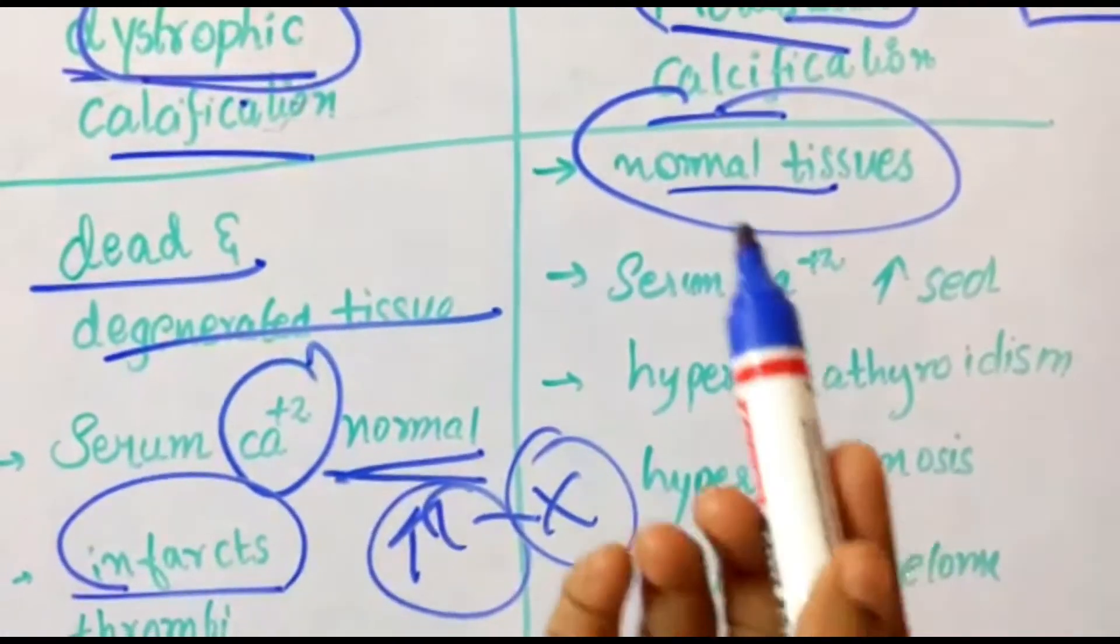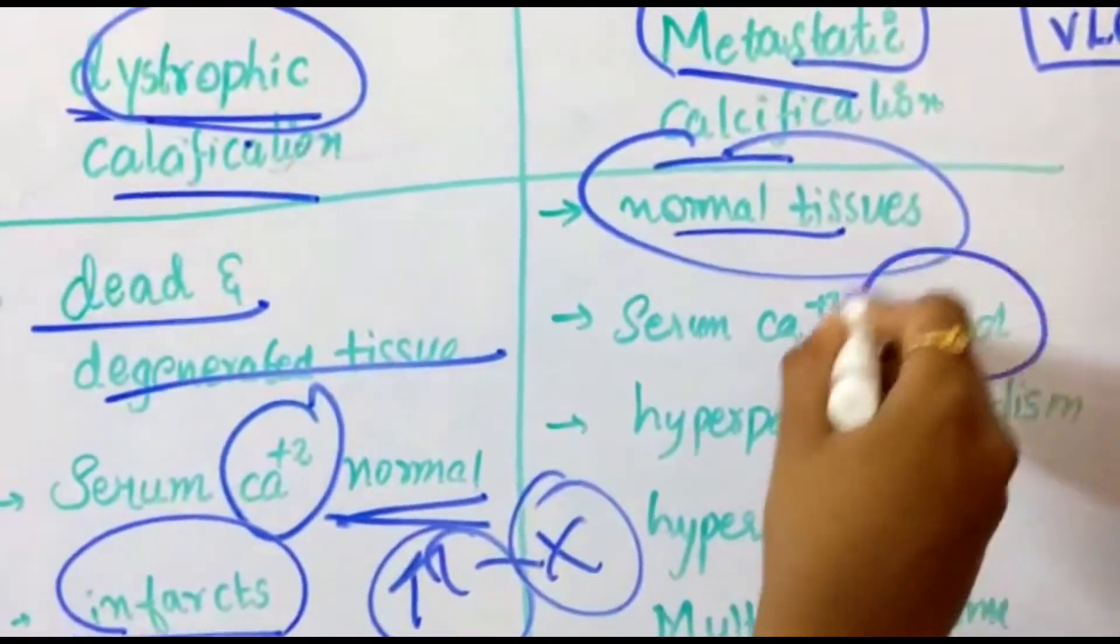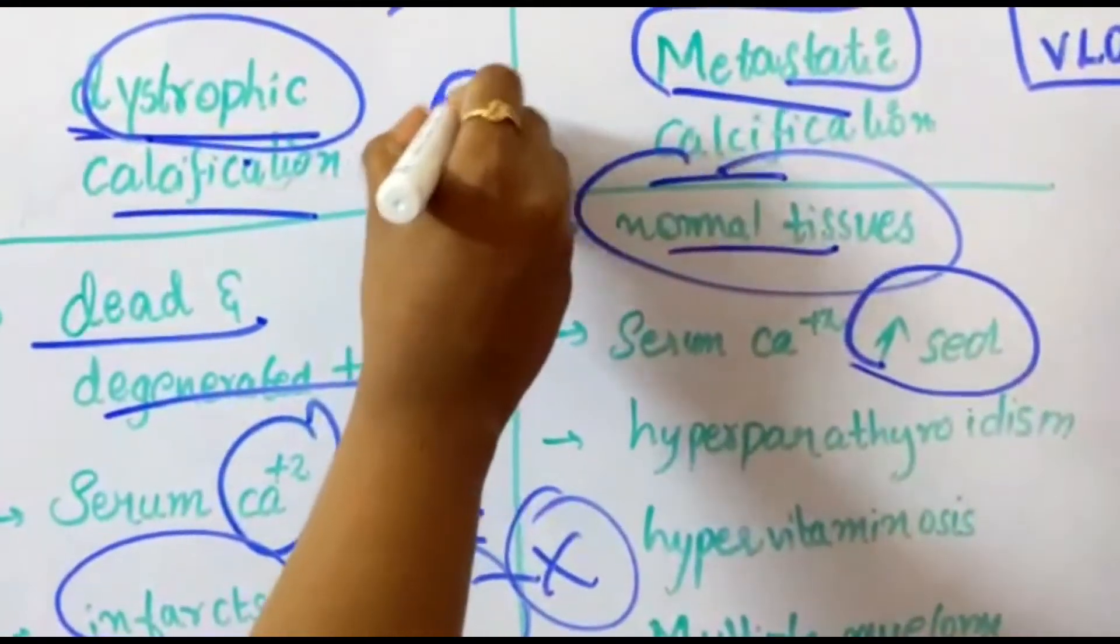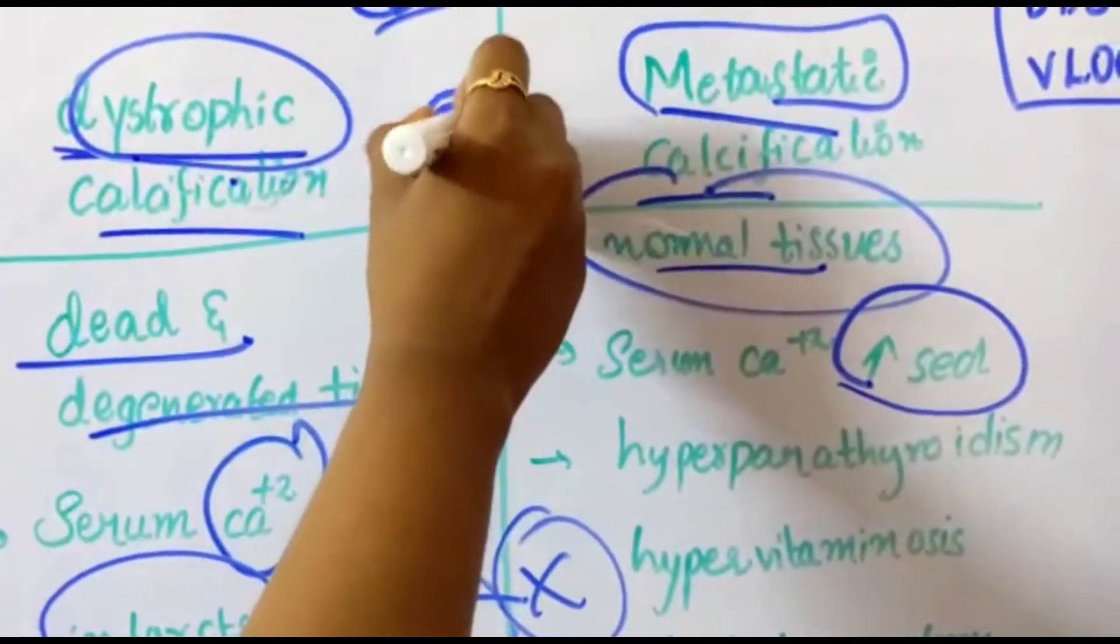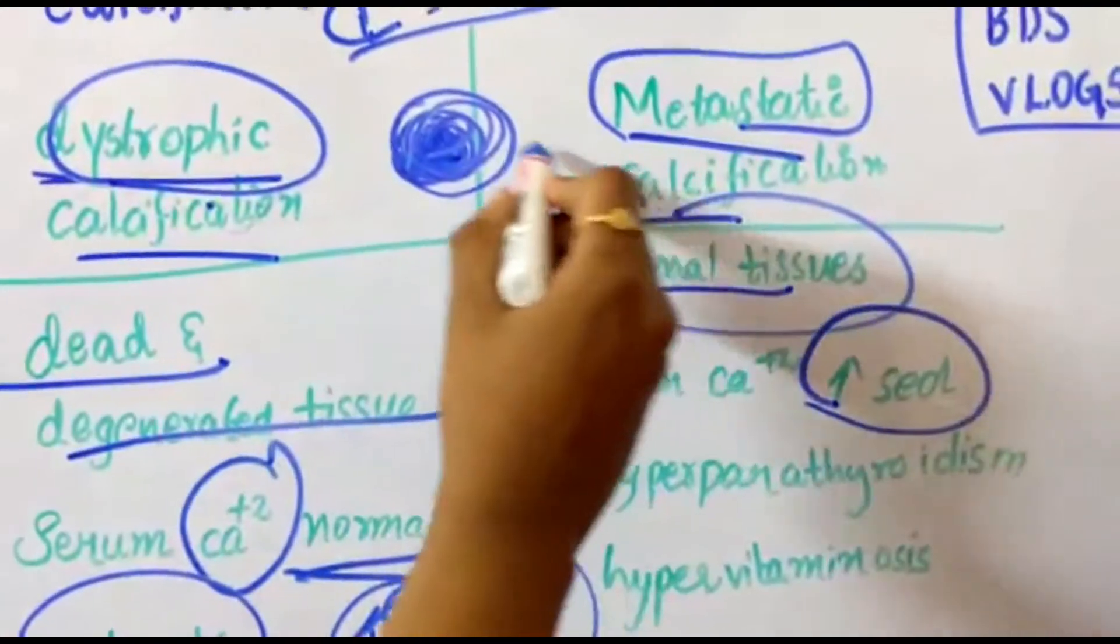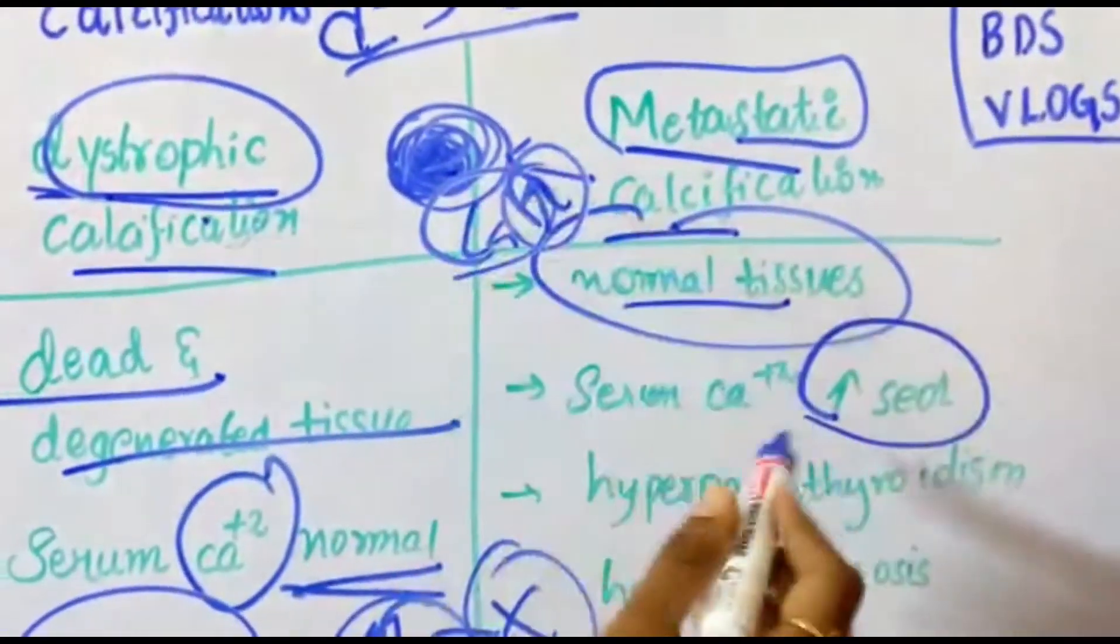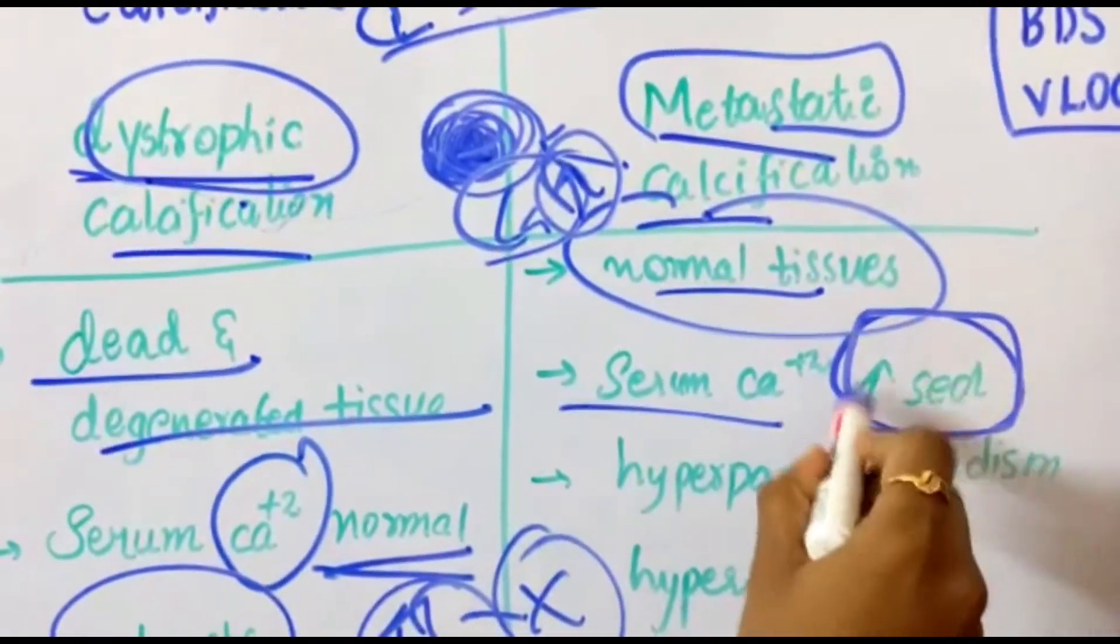Coming to metastatic, it occurs in normal tissues where serum calcium level increases. Calcifications means what in normal language? Stones. In stones generally we see calcium content is more, that's why serum calcium levels are increased here.